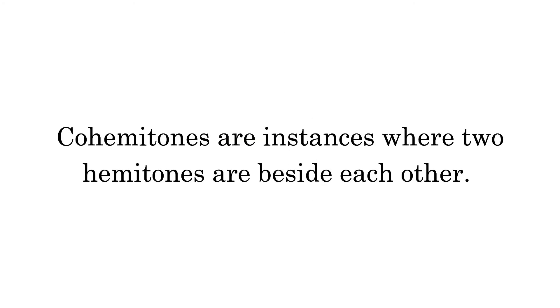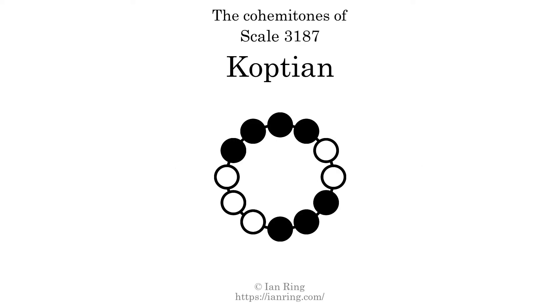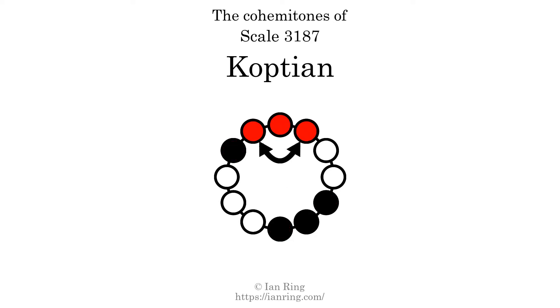Co-hemitones are instances where 2 hemitones are beside each other. This scale has 3 co-hemitones, they are at positions here, here, and here.